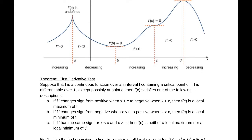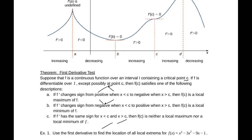Suppose that f is a continuous function over an interval I containing a critical point c — where the derivative is 0 or undefined. If f is differentiable over the interval except possibly at that point, then f(c) satisfies one of the following: if f' changes from positive to negative, then it's a local maximum; if f' changes sign from negative to positive, then we have a local minimum; and if it has the same sign on both sides — say increasing then increasing, or decreasing then decreasing — then it's neither a local maximum nor a local minimum.